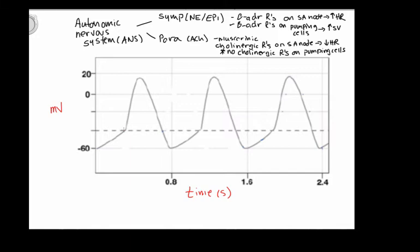Then we hit threshold, and that's enough change in voltage to open the voltage-gated calcium channels, so we have a rapid depolarization. The calcium channels close, potassium channels — voltage-gated potassium channels — open, and we have repolarization followed by after-hyperpolarization, which causes the next funny sodium channels to open, and so on. The action potential keeps going.